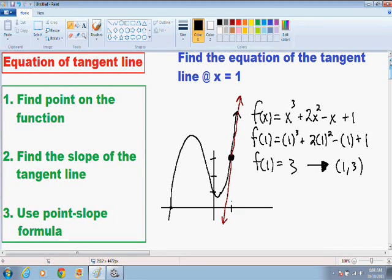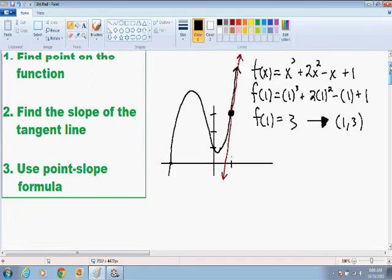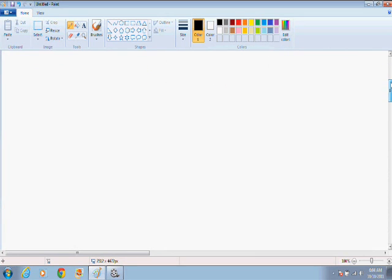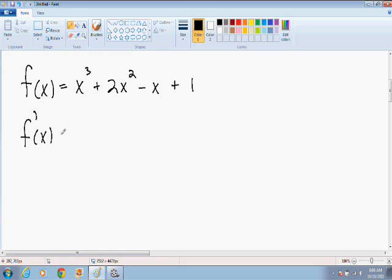Now let's move on to step number two. Step number two is to find the slope of the tangent line, and in order to find the slope of the tangent line, we need to take the derivative. So I'm just going to scroll down, and we are going to take the derivative of this function. The first thing I'm going to do is just rewrite the function. We can derive this function quite easily just using the power rule. The derivative is just 3x² + 4x - 1.